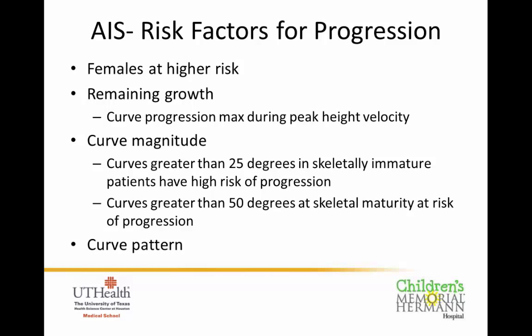Risk factors for progression include: being female — with a seven to one ratio for high-degree curves; remaining growth — curves progress most during peak height velocity; curve magnitude — curves greater than 25 degrees in a skeletally immature patient have high risk of progression, and curves greater than 50 degrees at skeletal maturity may continue to progress; and curve pattern — the location in the spine and whether it is a C or S shape.